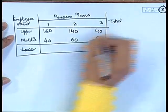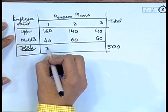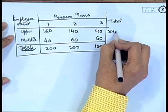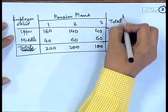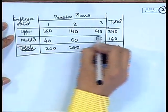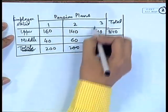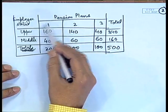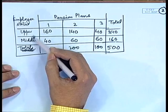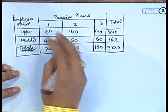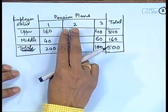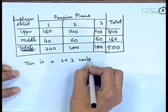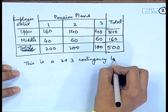If we calculate the row and column totals, they turn out to be 200, 200, and 100 for the rows, and 340 and 160 for the columns. We want to test whether the choice of pension plan is independent of the employee status. This is a 2 by 3 contingency table.